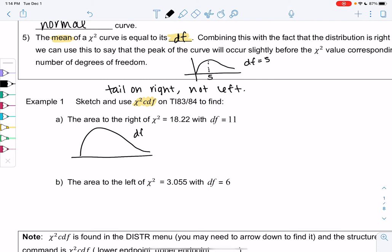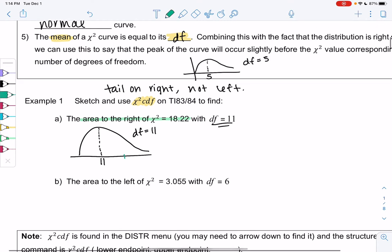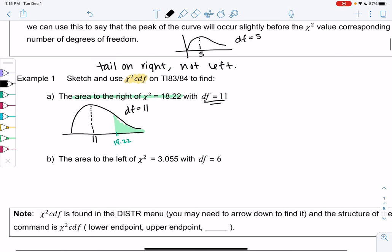Degrees of freedom equals 11 means my peak is around 11, and then we want to find the area to the right of 18.22. So 18.22, I'll just estimate it's somewhere to the right of 11, and then the area to the right means we shade to the right, and chi-square CDF will be very similar to all our other ones.